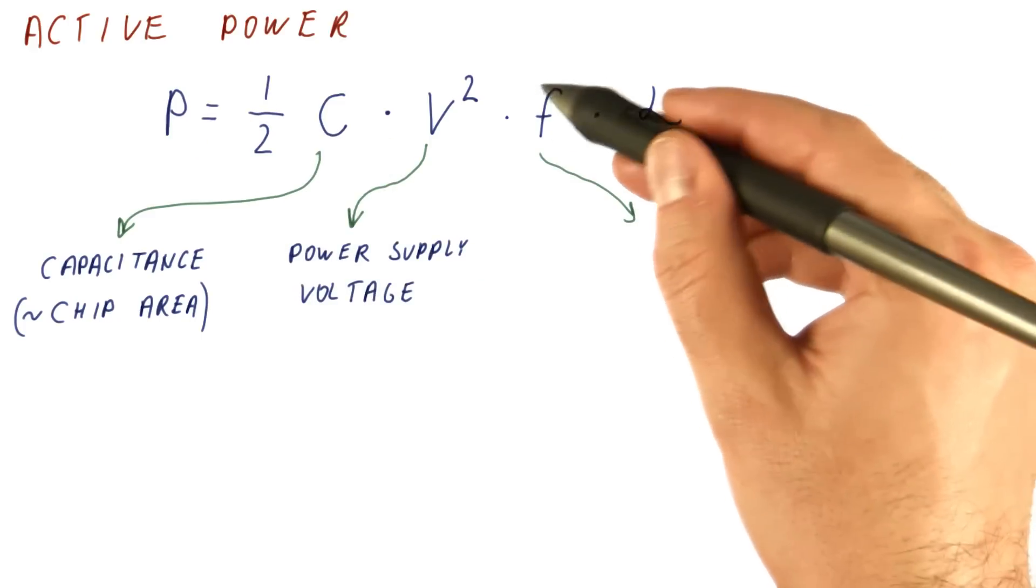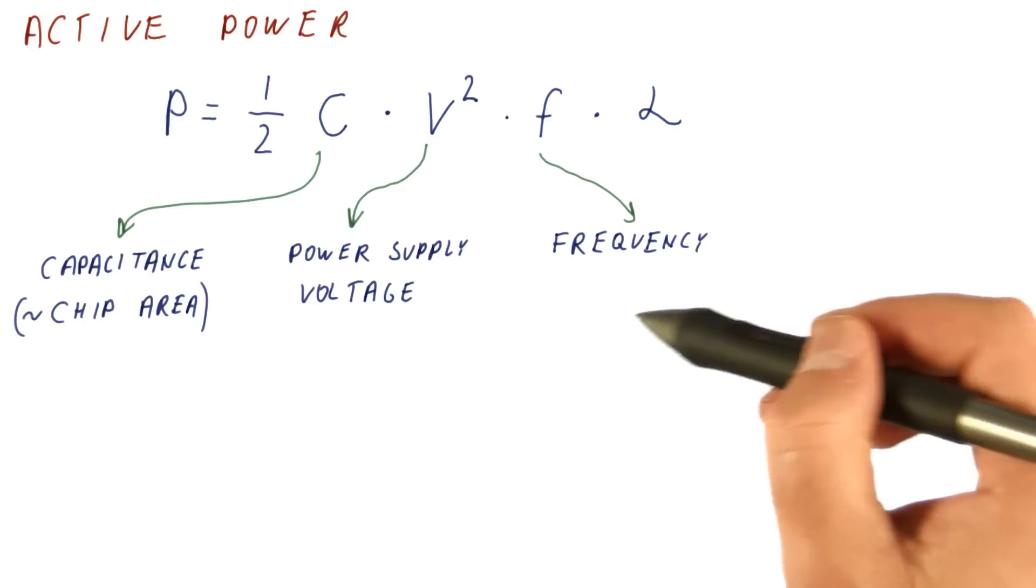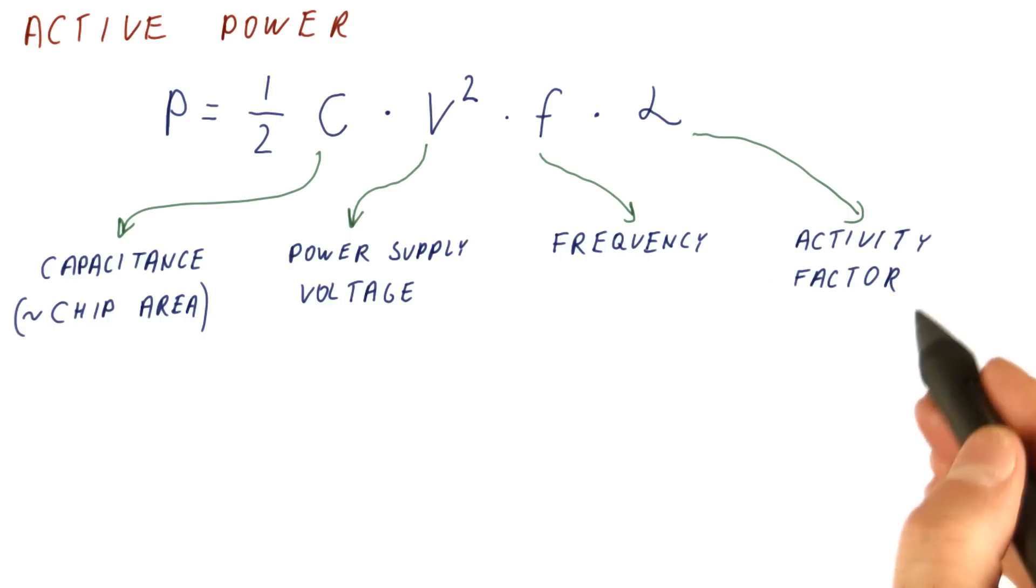The next factor is clock frequency. This is the gigahertz number that you normally see on a processor specification. And finally, the alpha is the activity factor.